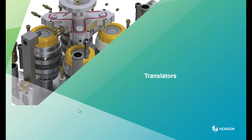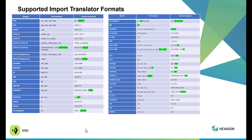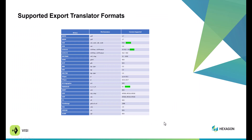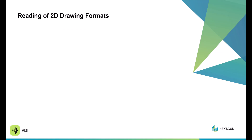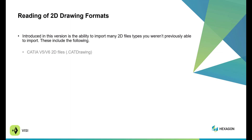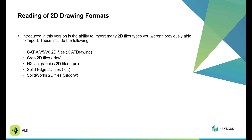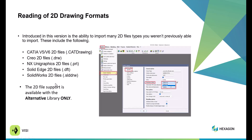We're going to talk about some of the new updates to the translators in 2023.1. Highlighted here are the new import translators, shown in green, and here are some of our new export translators. Probably one of the biggest translator updates is the ability to support more 2D formats. Formats now supported in 2023.1 include Catia drawing files, Creo drawing files, NX drawing files, Solid Edge drawing files, and probably the biggest one — SolidWorks drawing files — using the alternative library. This is a really big enhancement requested by many for years.